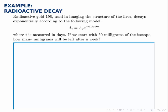We're given this model, and we're told how much we start with, that we start with 50 milligrams of this gold isotope, and we're told that T is measured in days.